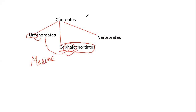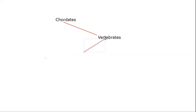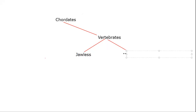Now let us read about vertebrates in detail. Vertebrata is a sub-phylum. Under sub-phylum come super-classes. Vertebrates are of two types: Agnatha and Gnathostomata — meaning jawless and jawed. Under jawless vertebrates, we have one class: Cyclostomata.